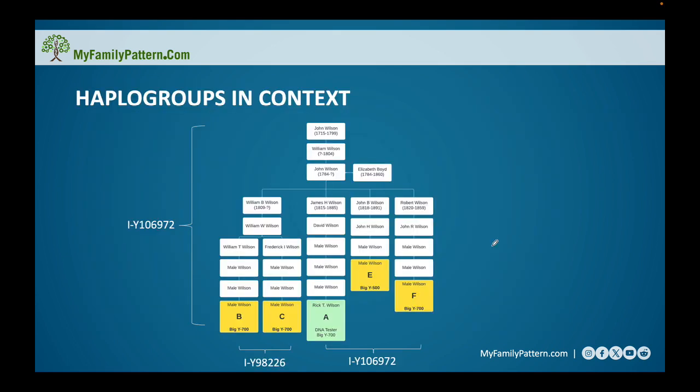So I thought it might also be helpful to show my haplogroup in the context of my family tree. And this would help you visualize what are the different generations that constitute my haplogroup and how does this actually show up within somebody's family tree?